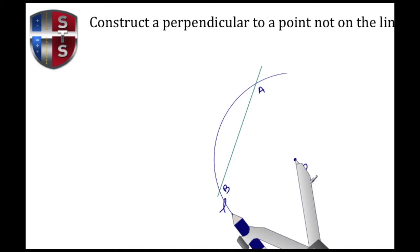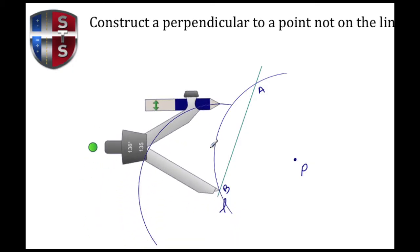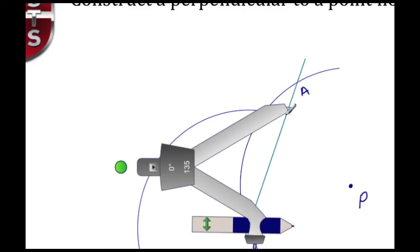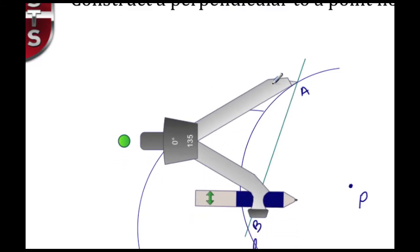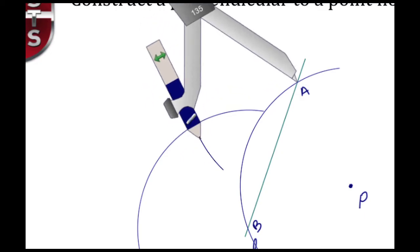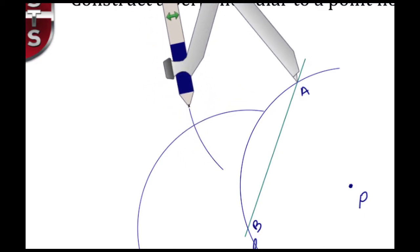Next thing you need to do is set the pointy end on each one of those intersections. I'm going to start here on point B and draw another arc. Then I'm going to move the pointy end to point A, and again I'm going to draw an arc. I'm looking for the intersection, so here I have an intersection and I'm going to call this intersection X.